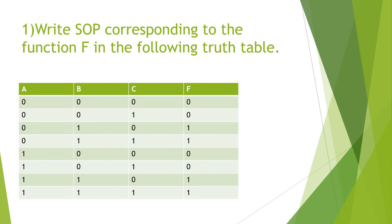Now let's check how to write the SOP. First question: write SOP corresponding to the function F in the following truth table. Here A, B, C are the logical variables and F is the output. For writing SOP, we first need to write minterms for the cases with output 1. In four cases the output is 1, so we write minterms for those four cases, then sum all those minterms to get the SOP.